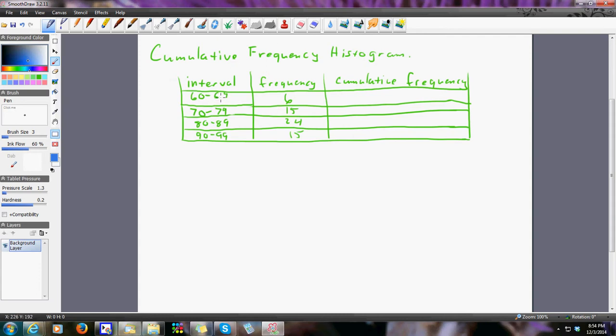On a recent exam I gave, I had a bunch of students, and between 60 and 69, six of them scored between that range. So between 60 and 69, I have six scores.